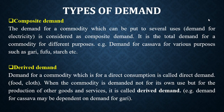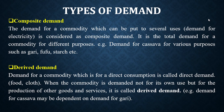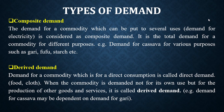Then we have composite demand — a demand for a commodity which can be put to several uses. You can demand a commodity and that commodity can be used for many things. An example is electricity — electricity can be used to cook, to power electric vehicles, and for household use like your television and sound system. It has several uses, so that is composite demand.